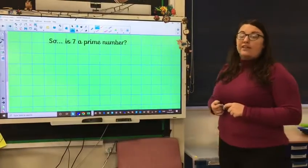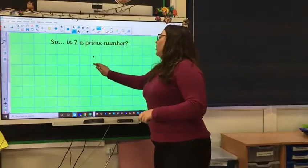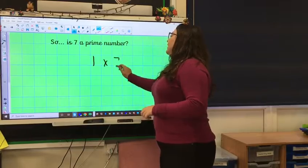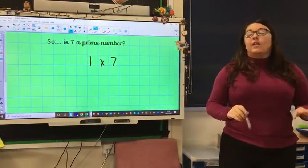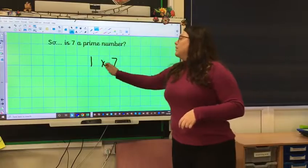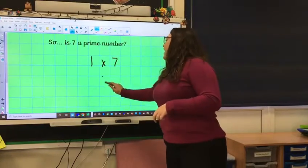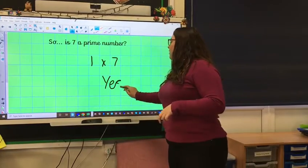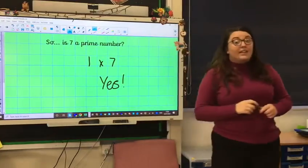Okay, so 7, the factors are 1 and 7 and that is it. So, it can only be divided by 1 and 7. So, yes, it is a prime number.